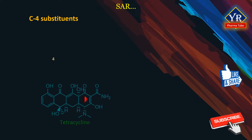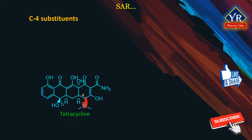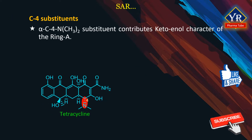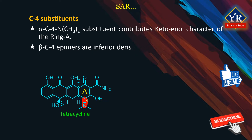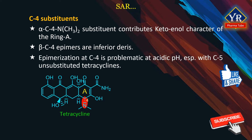C4 substituents. The naturally occurring tetracyclines contain an alpha-C4 dimethylamino substituent that favorably contributes to the keto enol character of the A ring. Beta-C4 epimers are inferior derivatives. Epimerization at the C4 position is problematic at acidic pH, particularly with the C5 unsubstituted tetracyclines.